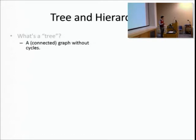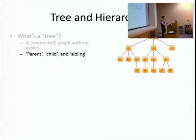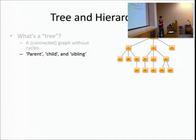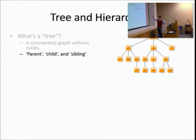A tree is defined as a connected graph without cycles. You've probably seen diagrams like this - that's a typical representation of a tree. I also want to introduce the concept of parent, child, and siblings. In a tree you always have a root, which is drawn at the very top of the diagram. The root is the parent of nodes 2, 3, and 4. In turn, node 2 is the parent of nodes 5, 10, and 11.